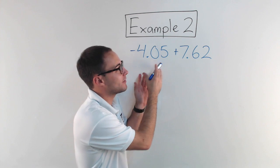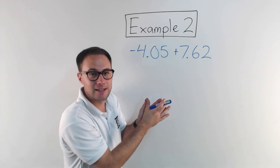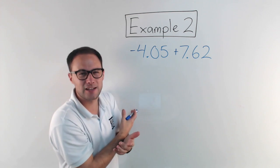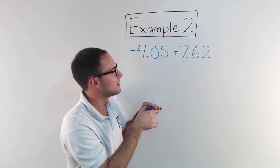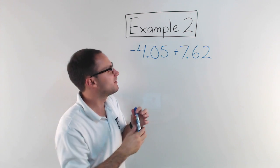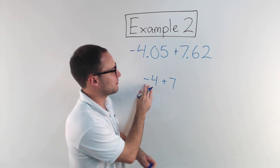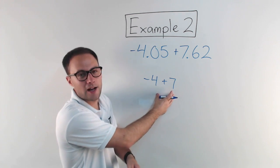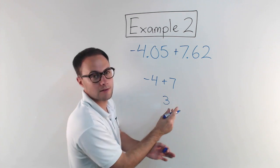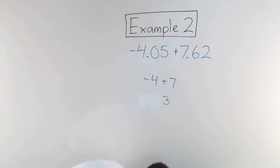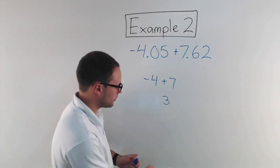When you have a negative and a positive decimal that you're adding together, some things are canceling out. And so to figure this out, it's a bit tough to do in your head. If it was just negative four plus seven, you'd think, okay, that negative four is canceling out four here, and I've got three left. Okay, that's simple.